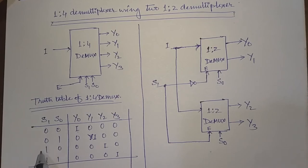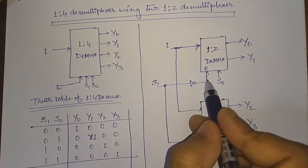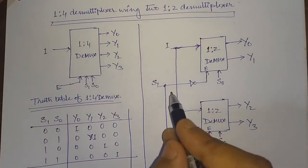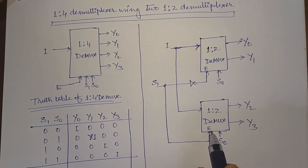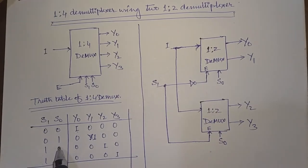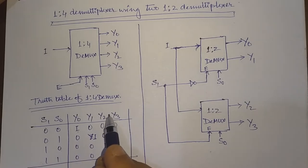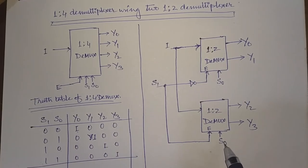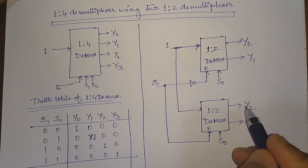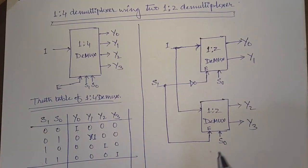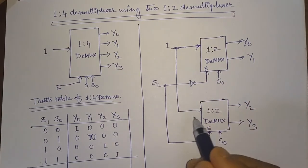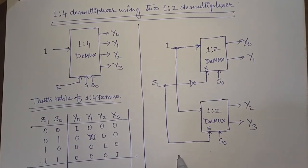For the remaining cases, when s1 is 1, the inverter outputs 0 to the lower demultiplexer, deactivating it, while the upper demultiplexer receives a high enable signal and becomes active. With the upper demultiplexer active, when s0 is 0 the input data is directed to y2, and when s0 is 1 the input data is directed to y3.